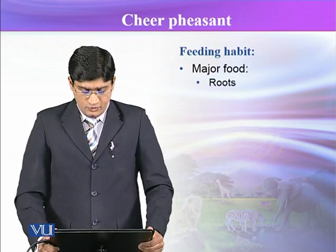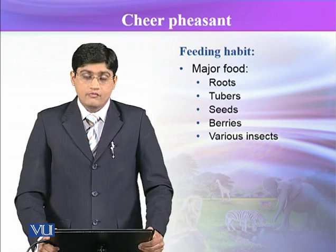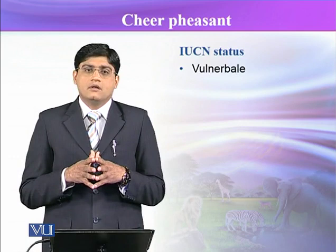With reference to feeding, the major food of the Chir Pheasant includes roots, tubers, seeds, berries, and various types of insects. Its IUCN status is vulnerable.